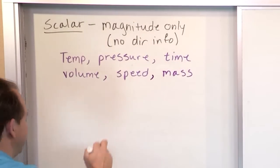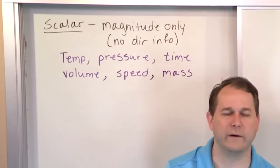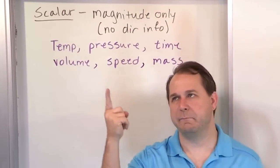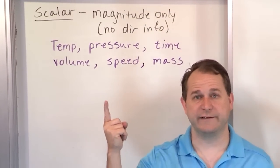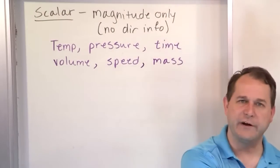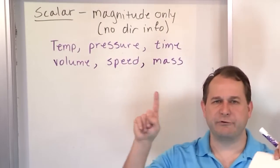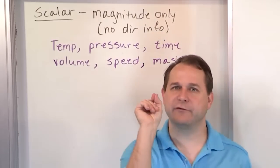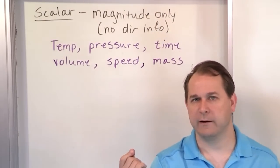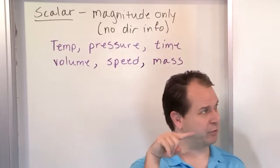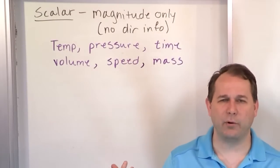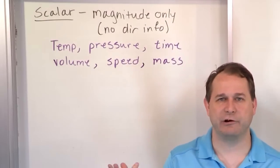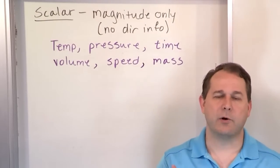Let's go through these quickly. If you have a temperature, there's a temperature at this point in space — it might be 27 degrees Celsius — and there's a temperature over here, 34 degrees Celsius. Those temperatures are different, but there's no directionality. If I measure the temperature here, which way is it pointing? Temperature is not pointing any particular direction. We just know that this point in space has a temperature, so it's just a number — what we call magnitude.